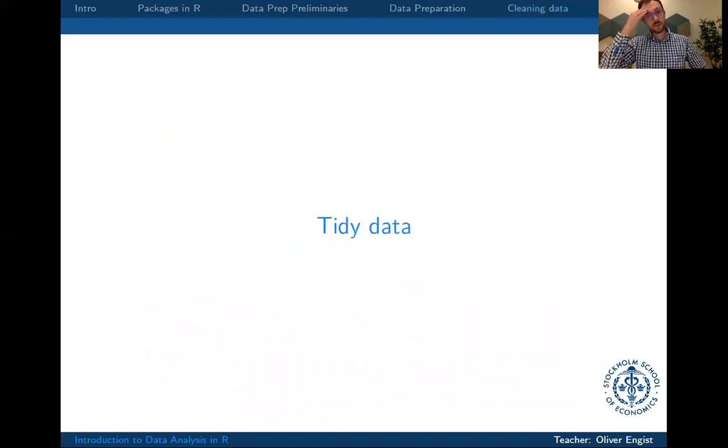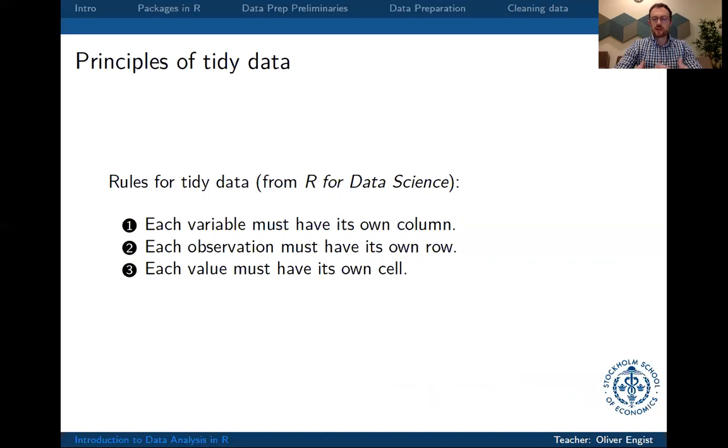So, the final functions that I want to introduce are functions that correspond to the reshape function, and what we're doing with that is basically we want to bring data into a so-called tidy form, as they're called in the tidyverse, which means that we want to have our dataset in a form that each variable has its own column and each observation has its own row. And correspondingly, every value has its own cell.